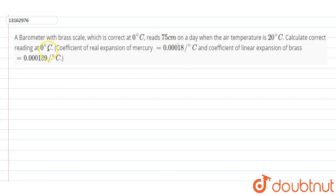Now, calculate the correct reading at 0 degree Celsius. Because the correct reading is at 0 degree Celsius, we will find out what will happen at 0 degree Celsius. At 0 degree Celsius, there will be correct reading. Coefficient of real expansion of mercury and brass has been given to us.